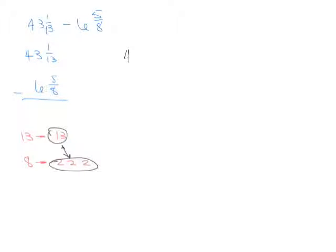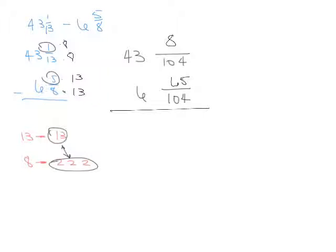So we have 43, and instead of a 13, we're going to put 104. And we have a 6, and instead of an 8 for 5/8, we're going to put 104. So now we have to figure out, what did we multiply 13 by to get 104? And then what did we multiply 8 by in order to get 104? We multiplied 13 times 8 to get 104, so we have to multiply 1 times 8. So that gives us an 8 up here. We multiplied 8 times 13 to get 104, so we have to multiply 5 times 13 in order to get our top number, which in this case then would be 65, and we're subtracting.